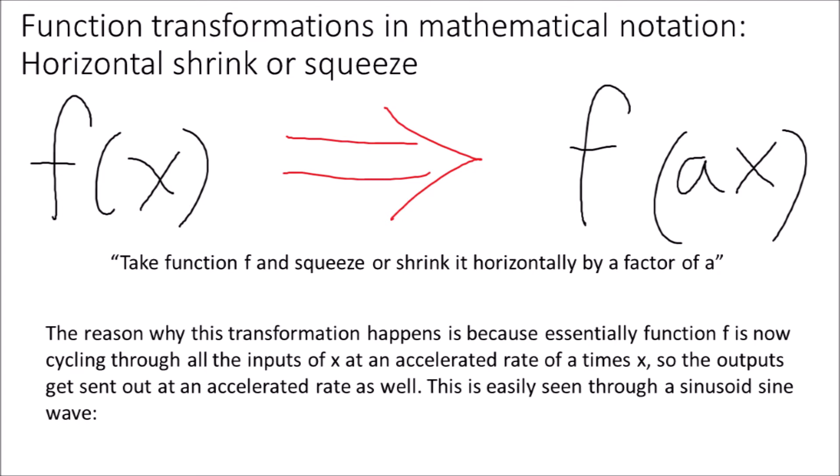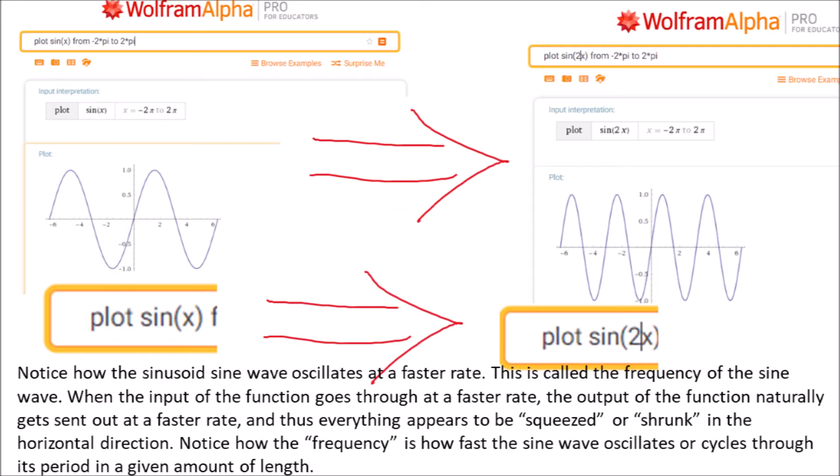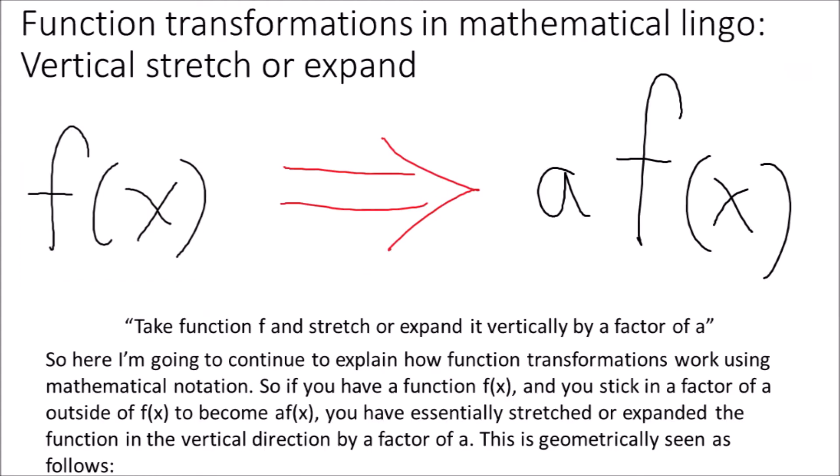This is easily seen through a sinusoid sine wave. Notice how the sinusoid oscillates at a faster rate — this is called the frequency of the sine wave. When the input of the function goes through at a faster rate, the output naturally gets sent out at a faster rate and thus everything appears to be squeezed or shrunk in the horizontal direction. The frequency is how fast the sine wave oscillates or cycles through its period in a given amount of length.